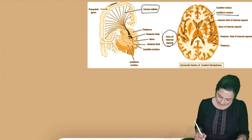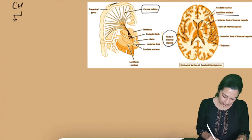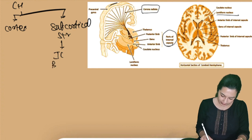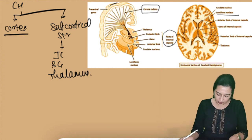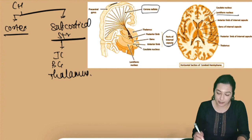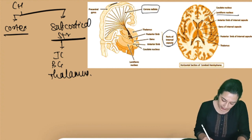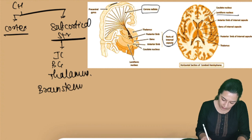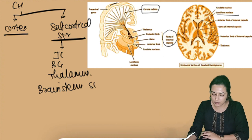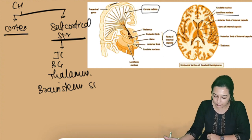The cerebral hemisphere is divided into two parts: the cerebral cortex and subcortical structures below the cortex. Subcortical structures include the internal capsule, basal ganglia, thalamus, hypothalamus, and others. The internal capsule becomes the connecting element between the cortex, subcortical structures, brain stem, and spinal cord.